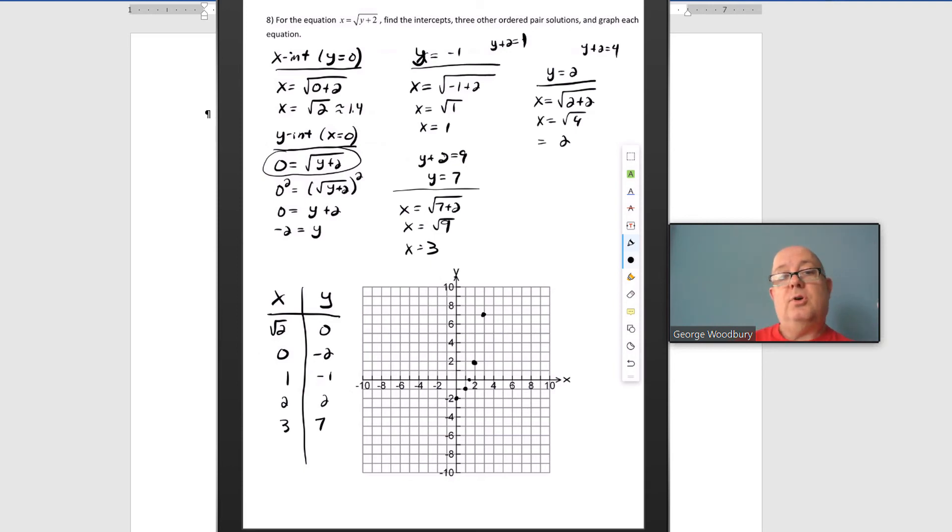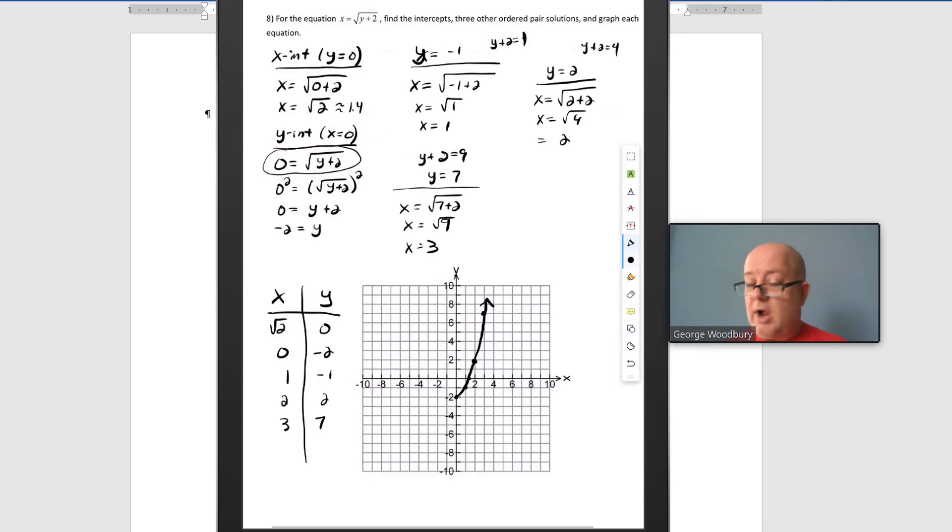Now, one thing that we do know is that on a real number graph, which is what we're doing here, if y is lower than negative 2, then what's inside that square root is going to be negative, and we can't take the square root of a negative number as a real number. So that's where this graph actually begins. It begins at 0, negative 2, and then it sweeps up and through all the rest of those points. And it's not linear. It's got a little bend to it. So let's try one more.